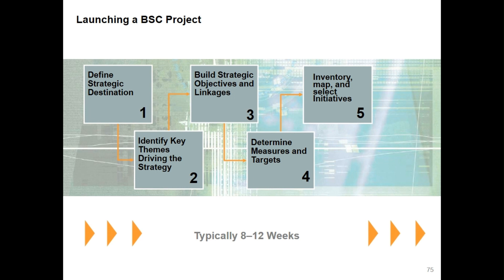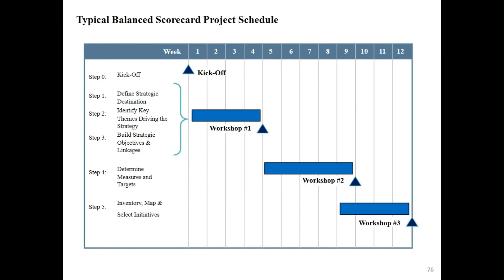The typical balanced scorecard project schedule: Step 0 is the kickoff in Week 1. Step 1 is to define strategic destination. Step 2 is to identify key themes driving strategy. Step 3 is to build strategic objectives and linkages — Steps 1, 2, and 3 take 4 weeks. Step 4 is to determine measures and targets (4 weeks). Step 5 is to inventory, map, and select initiatives (4 weeks).